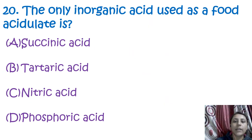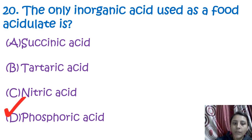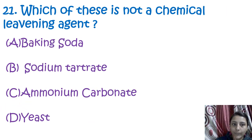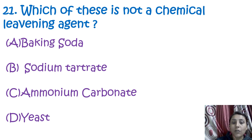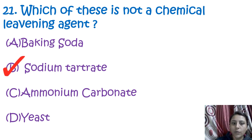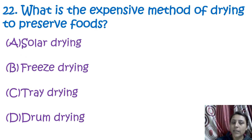The next question is: what is the only inorganic acid used as a food acid? That is phosphoric acid. The following question asks which of these is not a chemical leavening agent. The answer is sodium tartrate. As we know, baking soda and ammonium carbonate are chemical leavening agents, and yeast is used in fermentation.